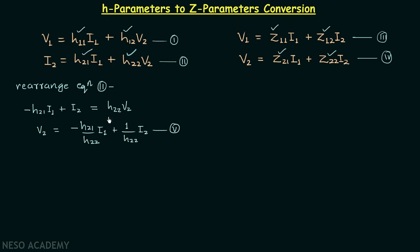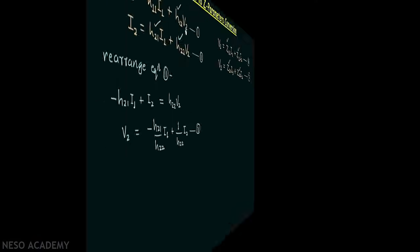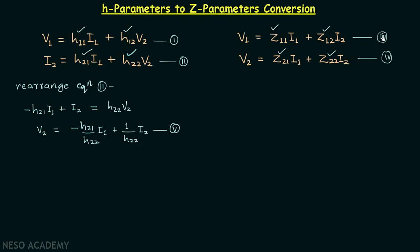Comparing equation five with equation four, they have the same form. Now let's compare equation three with equation one. In equation three we have variables V1, I1, and I2, but in equation one we have V1, I1, and V2. So in order to match the form of equation three, we need to eliminate V2 from equation one. We can do this by substituting V2 from equation five into equation one.